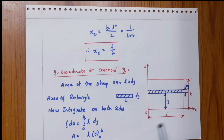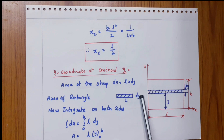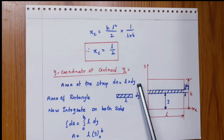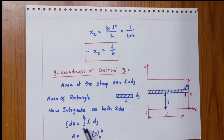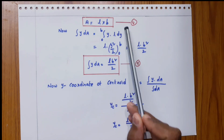Now for the y-coordinate of the centroid. Consider the same rectangle of length L and depth B. Now consider a strip parallel to the x-axis. The distance from the x-axis to the strip is y. The area of the strip: length is L, height is dy, so strip area equals L into dy. Integrating both sides from 0 to B: A equals L into B. This is equation number 4.